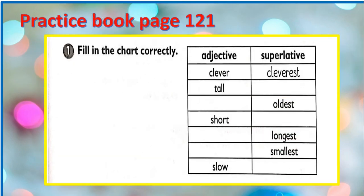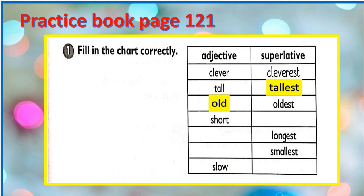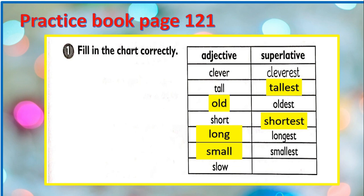Open your practice book, page 121. Clever — cleverest. What is the superlative of tall? It's tallest. What is the adjective of oldest? It's old. How about short? It's shortest. What is the adjective of longest? It's long. The adjective for smallest? It's small. What is the superlative of slow? It's slowest.